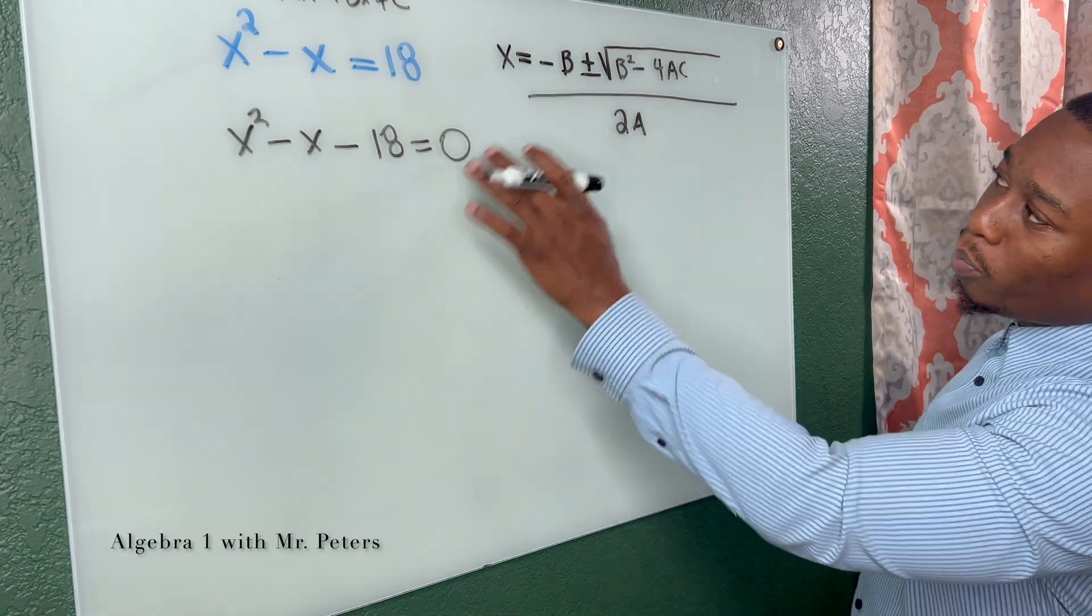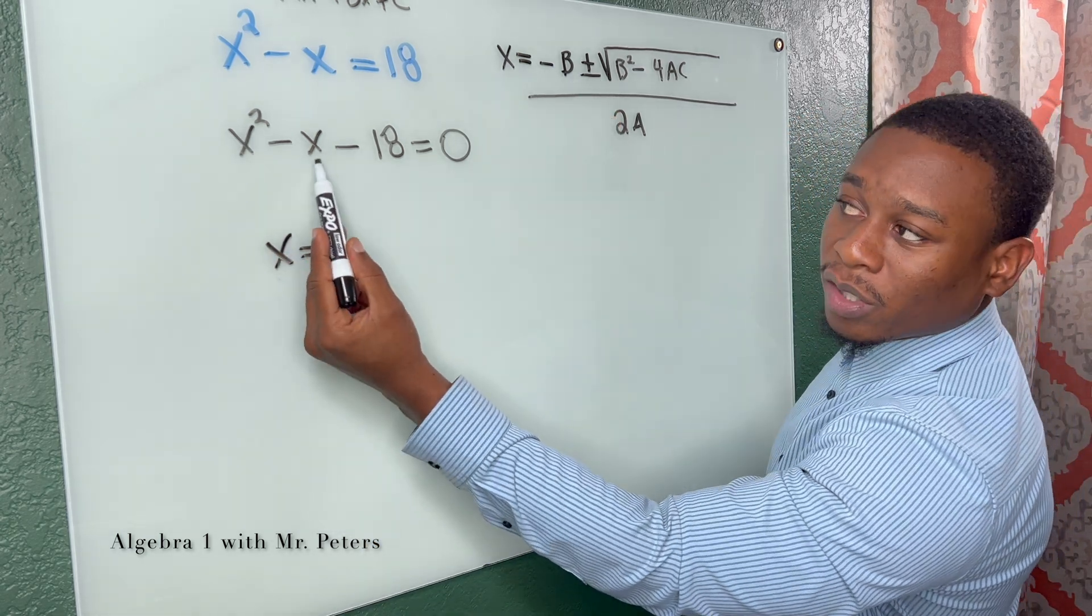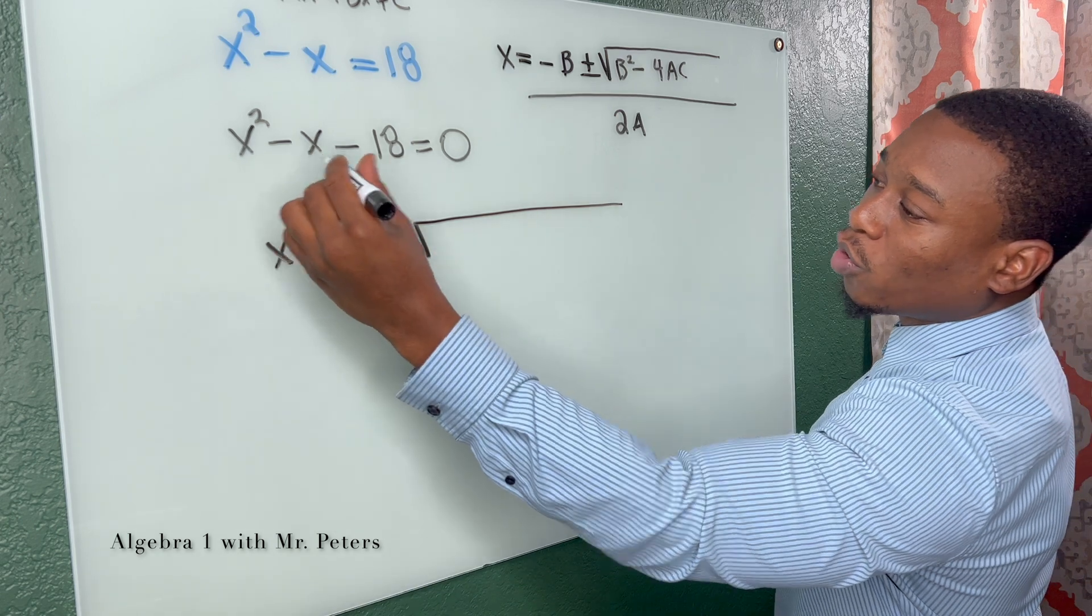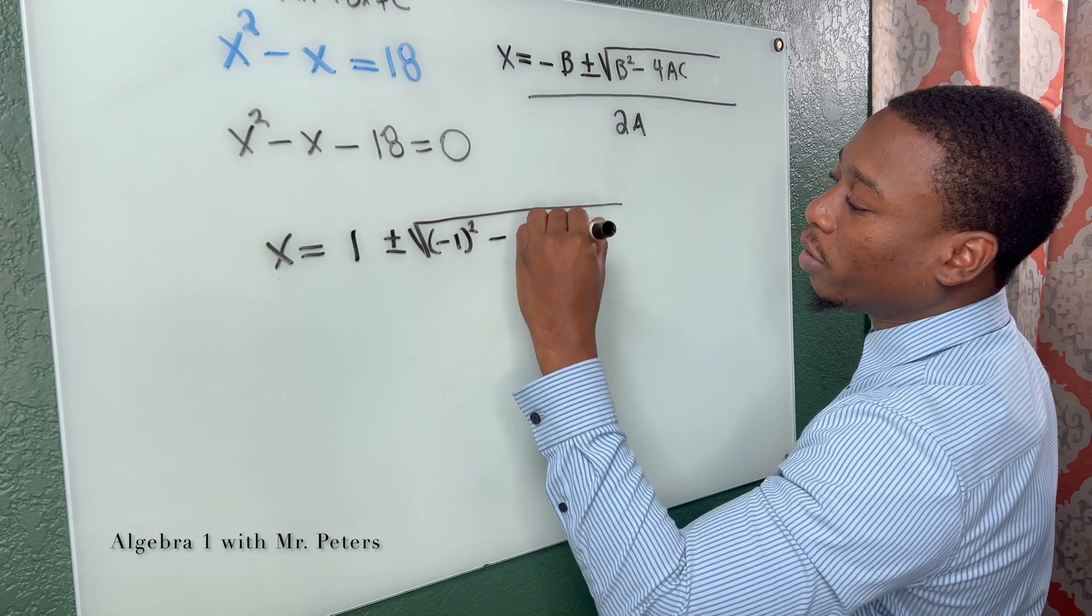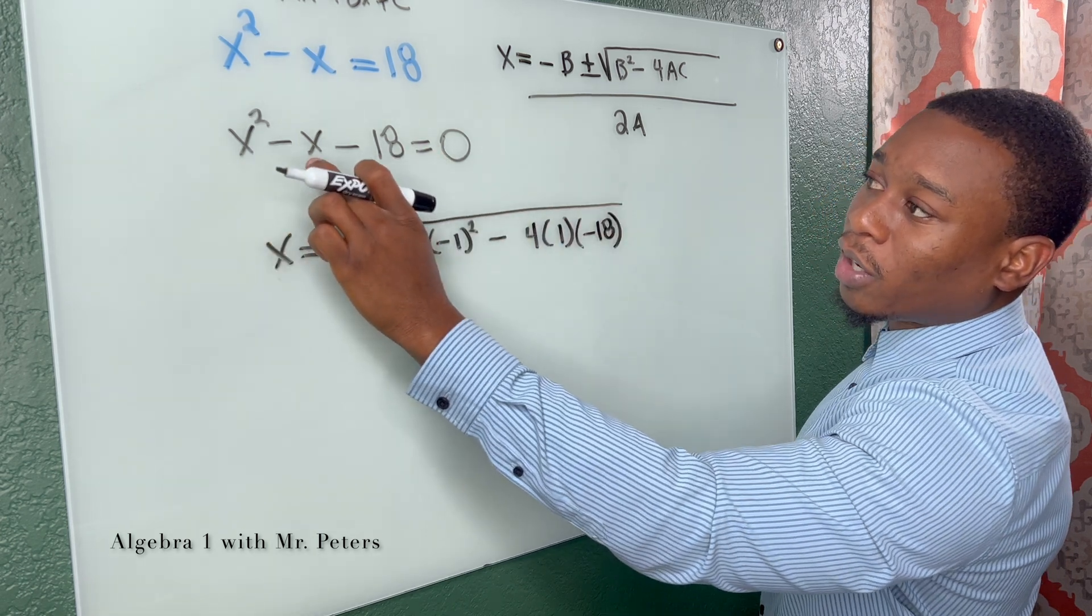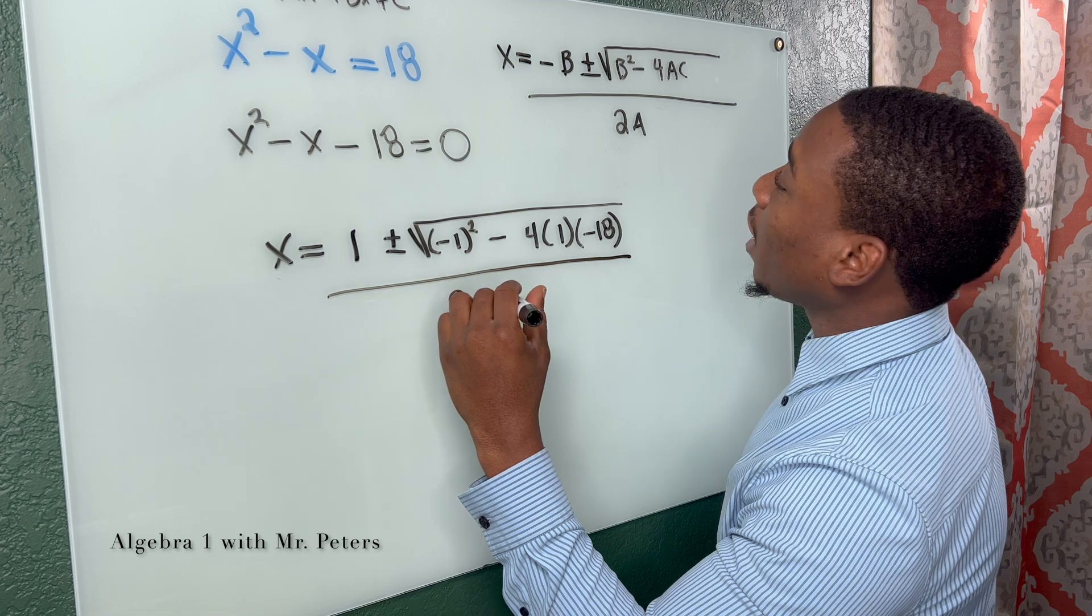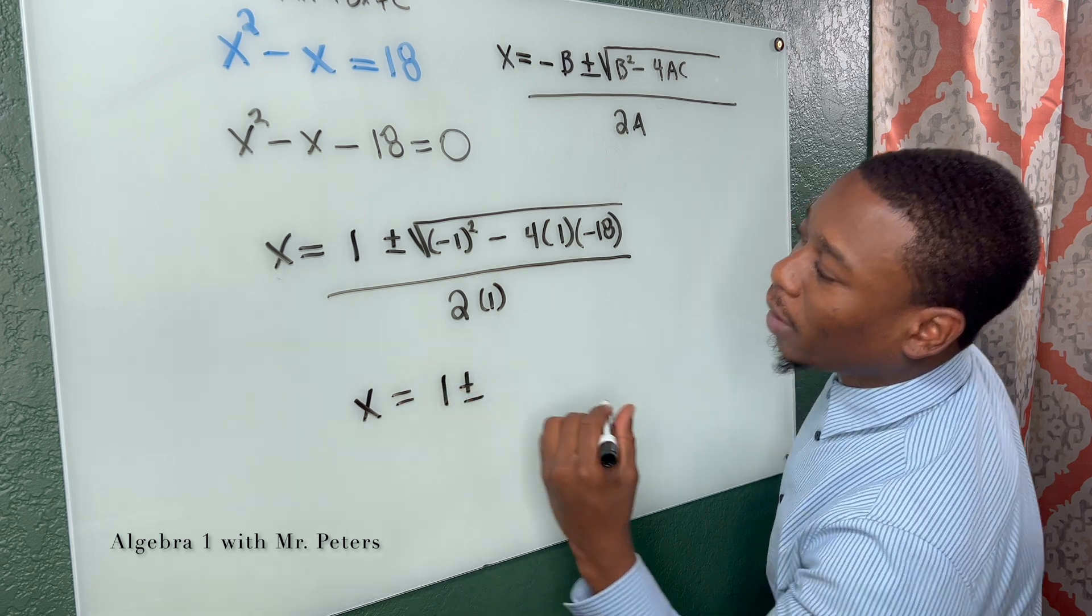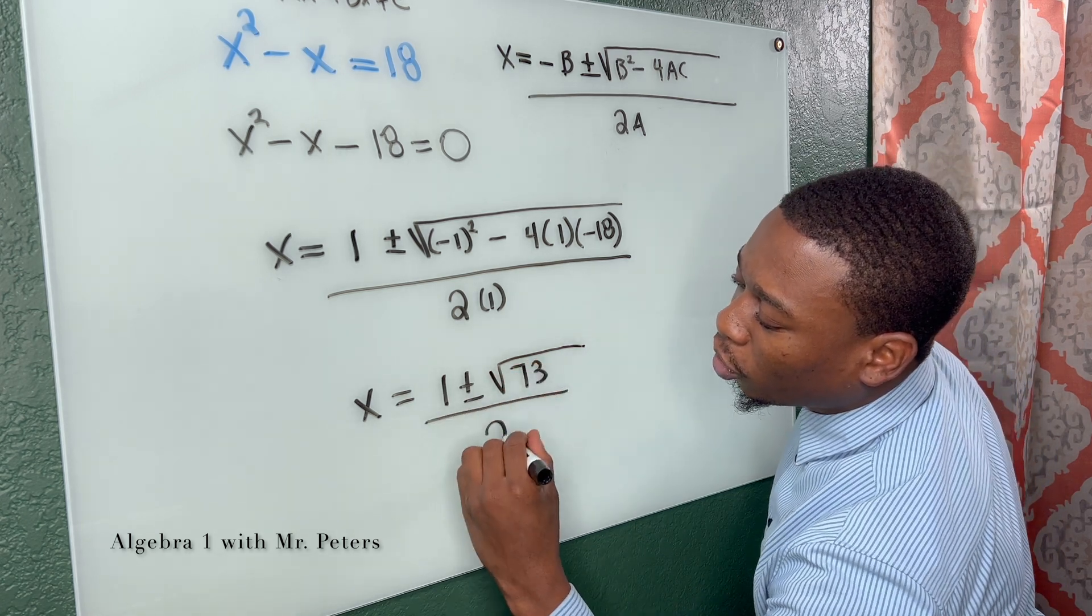So now what we're going to do is we're going to plug these numbers in. We have x is equal to the opposite of b. b is negative x, that's just negative one. So now this is positive one plus or minus, and then we have b squared. So remember, b is just negative one squared minus four times a, which is one, times c, which is negative 18. This is our a, this is our b, this is our c, just so that you guys know. Now we're going to divide this all over two times a, which is just one. So we go down here, x is equal to one plus or minus, and this should be the square root of 73, if I'm not mistaken, all over two.